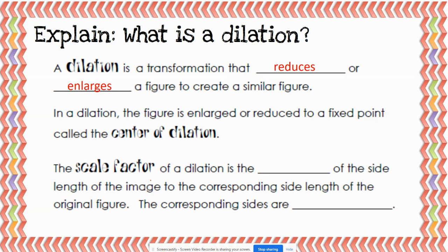The scale factor of a dilation is the ratio of the side length of the image to the corresponding side length of the original figure. The corresponding sides are going to be proportional. They will not be congruent because you have either reduced or enlarged the figure. But when you compare the ratios of each side of the image to the ratios of each side of the pre-image, those ratios should be equal.